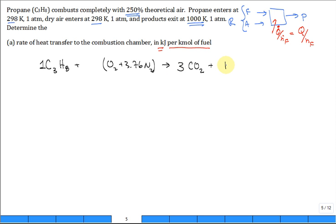And then the amount of water in the vapor state. At a thousand Kelvin it's definitely vapor. And at this point we can even get the coefficient in front of the water doing a hydrogen balance. We see that H's only are in the fuel, there's eight of them, so we have four.